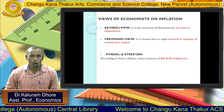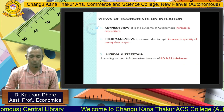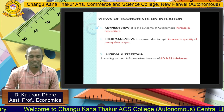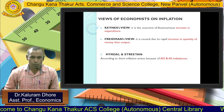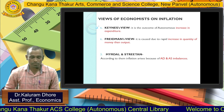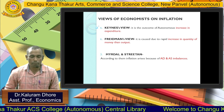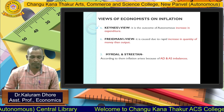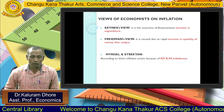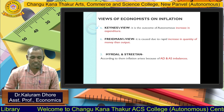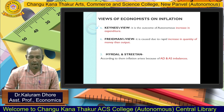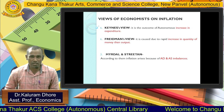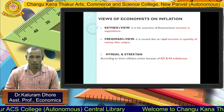According to views of economists on inflation: First, Keynes' view — inflation is the outcome of an autonomous increase in expenditure. Second, Friedman's view — it is caused by a rapid increase in the quantity of money relative to output. Third, Myrdal and Streeten — according to them, inflation rises because of an imbalance between aggregate demand and aggregate supply.